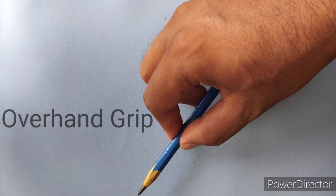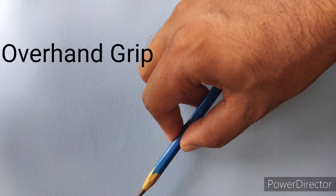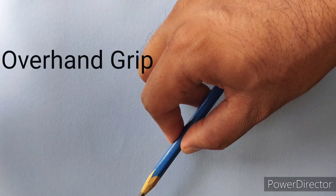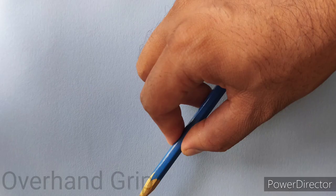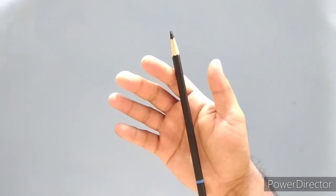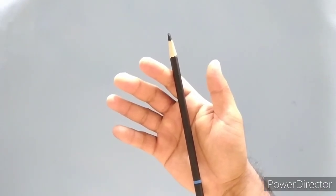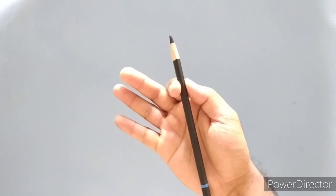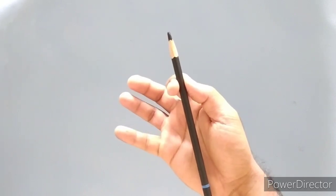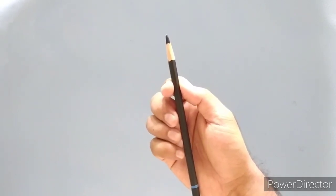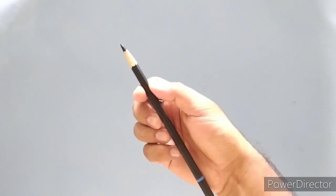The second type is the overhand grip. Overhand grip is holding your hand over the pencil. An easy way to do this is place the pencil in your palm, hold it with the thumb and index finger and place the remaining fingers on the pencil lightly, like this.